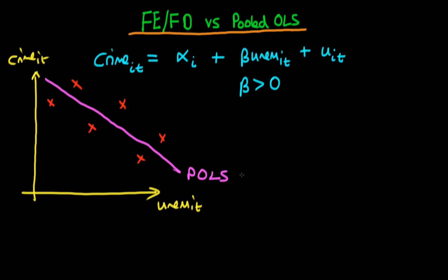Notice that what pooled OLS would output here is a value of beta which is less than zero. And importantly, this is completely nonsensical — it says that if the unemployment rate increases, there tends to be a decrease in the crime rate. We know in practice that that's hardly ever the case. So why does pooled OLS give such a poor estimate?